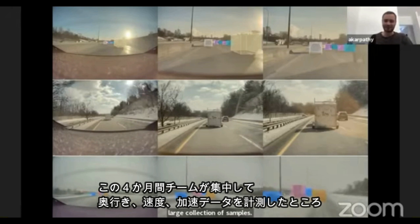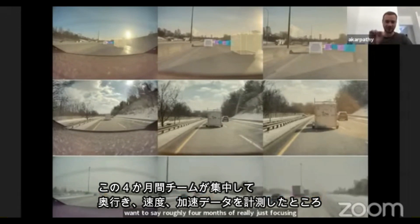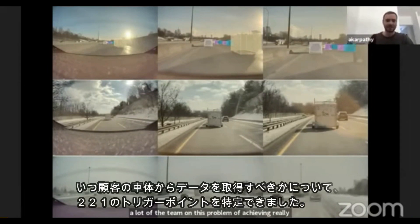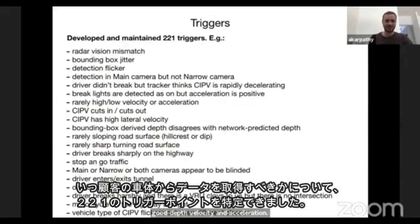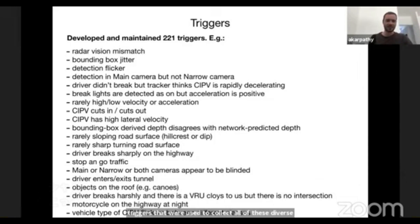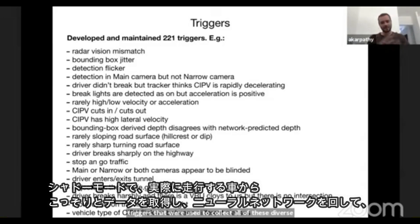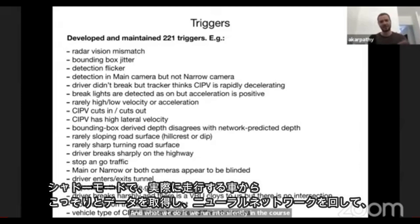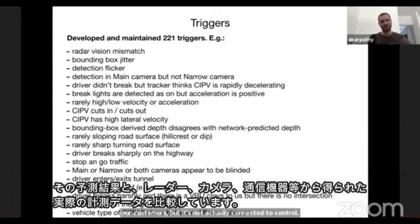Over roughly four months of focusing the team on achieving really good depth, velocity, and acceleration, we developed 221 triggers manually to source data from our customer fleet. For example, we use shadow mode — we deploy a neural network that predicts depth and velocity, running it silently in customer cars without connecting it to vehicle control. We then compare its measurements against the legacy stack and radar to find disagreements.